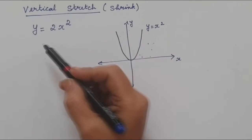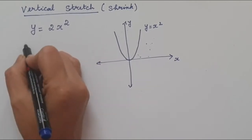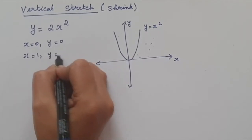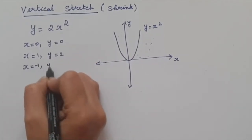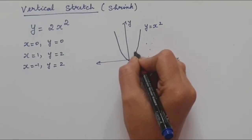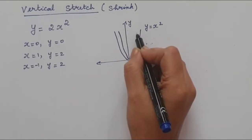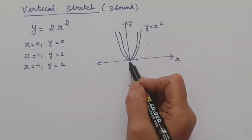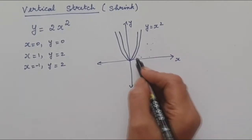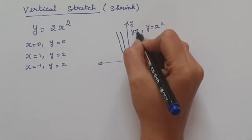Now for vertical stretch or shrink: y = 2x². This is the graph of y = x². Substituting values: if x = 0, y = 0. When x = 1, y = 2. When x = -1, y = 2. So the points are 0, then 1 giving 2. When we plot it, we get a graph that is narrower. Though the graphs for horizontal stretch and vertical stretch look similar, when extended on a bigger graph there is a difference — it is increasing in the y direction. This is the graph of y = 2x².